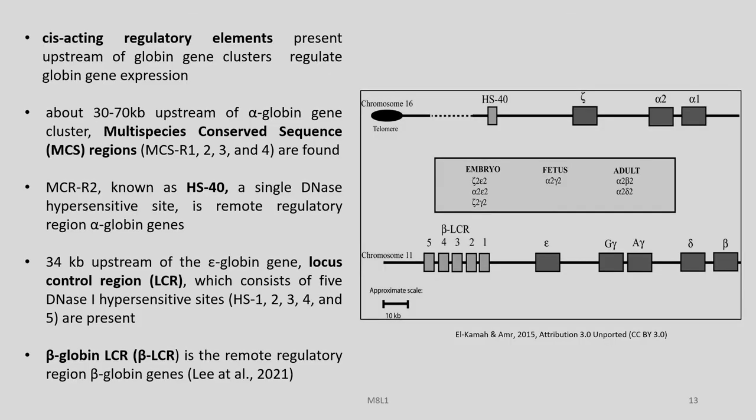There are cis-acting regulatory elements present upstream of globin gene clusters that regulate globin gene expression. About 30 to 70 kilobases upstream of the alpha-globin gene cluster, multi-species conserved sequence regions MCS-R1, 2, 3, and 4 are found. MCS-R2, known as HS-40, a single DNase I hypersensitive site, is the remote regulatory region for alpha-globin genes. About 34 kilobases upstream of the epsilon-globin gene, the locus control region or LCR consists of 5 DNase I hypersensitive sites HS1 through HS5. The beta-globin LCR is the remote regulatory region for beta-globin genes.